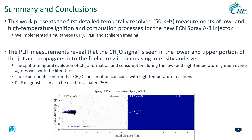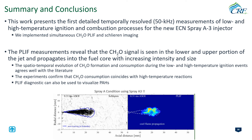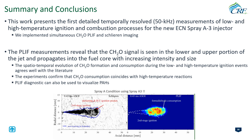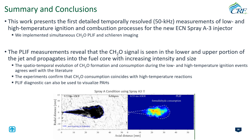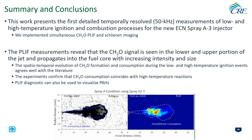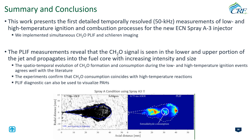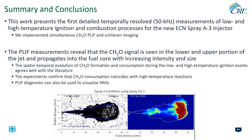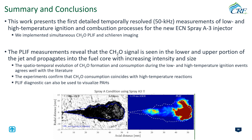In summary, we presented for the first time detailed measurements of low- and high-temperature ignition processes in high-pressure spray flames using high-speed radiation diagnostics. Our combined formaldehyde FLIP and Schlieren diagnostics revealed interesting phenomena including cool flame formation and propagation, high-temperature ignition, formaldehyde consumption, and polyaromatic hydrocarbon formation in spray-A flames under high pressures. Thank you for your attention.